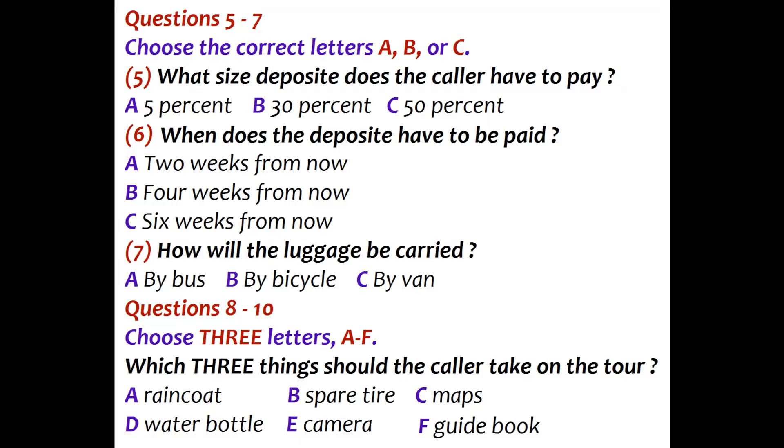In order to reserve your space on the tour, I'll need a 30% deposit. Do you need that right away? We generally ask for the deposit at least four weeks before the tour begins. The River Valley tour begins, let me see, six weeks from now. So you'll need to pay the deposit in two weeks. I think I can do that.